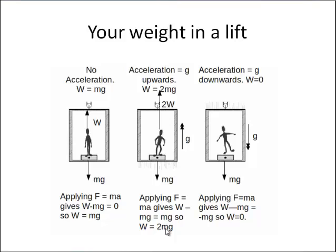I'm hoping no one's been in a situation where a lift has been in free fall, but this is what we need to think about. Because we'll be accelerating downwards at the same speed as the lift, we find a situation where W − mg = −mg. So that means that the weight shown is going to be equal to zero — and now we have a weightless situation. If you're in an object accelerating downwards due to gravity, you will feel weightless.